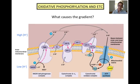The concentration gradient doesn't just exist — it is created by electrons moving along the electron transport chain, where they begin at a higher potential energy and end at a lower potential energy. The electrons move down the chain until they are accepted by oxygen, the final electron acceptor. At this point, they combine with hydrogen to make water, one of the byproducts of cellular respiration.